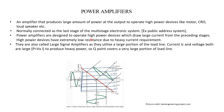Power amplifiers are designed to operate high power devices which draw large current from the preceding stages. High power devices have extremely low resistance due to heavy current requirements. Devices like motors and CRO are low resistance devices that draw heavy current, so we use the power amplifier to supply that current. Power amplifiers are also called large signal amplifiers as they utilize a large portion of the load line.